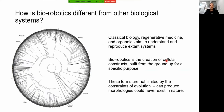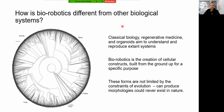What makes bio robotics really special and different from a lot of these other biological systems is that developmental biology, regenerative medicine, and organoids all really aim to understand and reproduce systems that exist here on Earth. But bio robots are the creation of cellular constructs built from the ground up for human purposes. We can build things in the lab that aren't constrained by the tree of life — things that don't exist in nature. We can build shapes and forms specific for human problems, the same way we would design a robot for human problems.